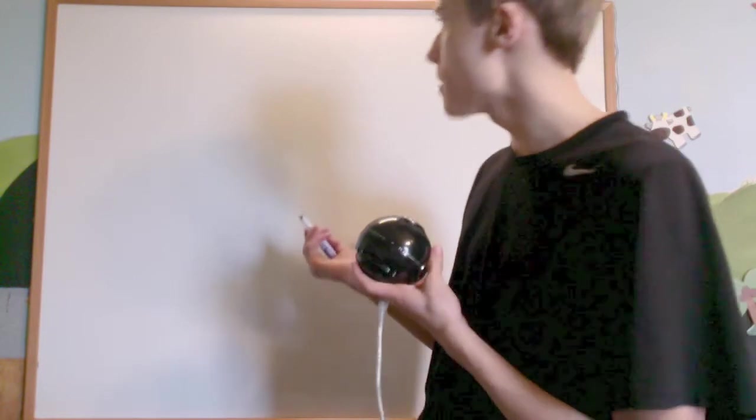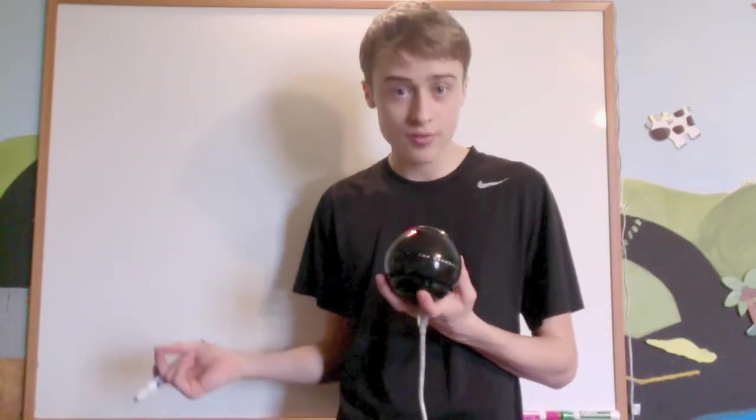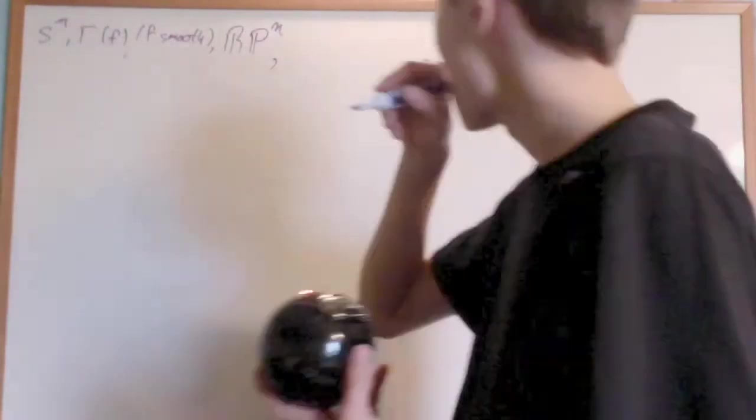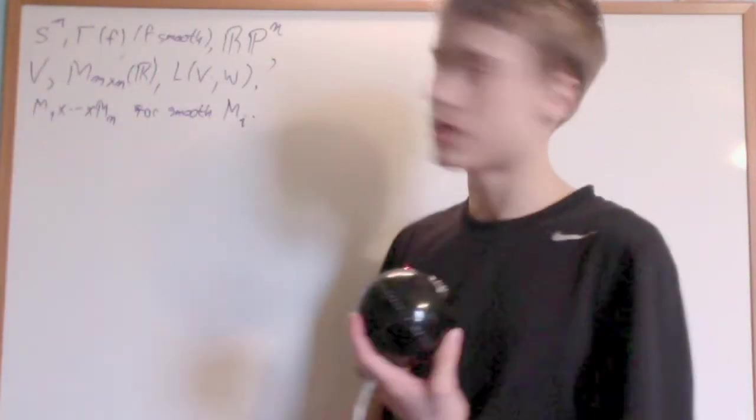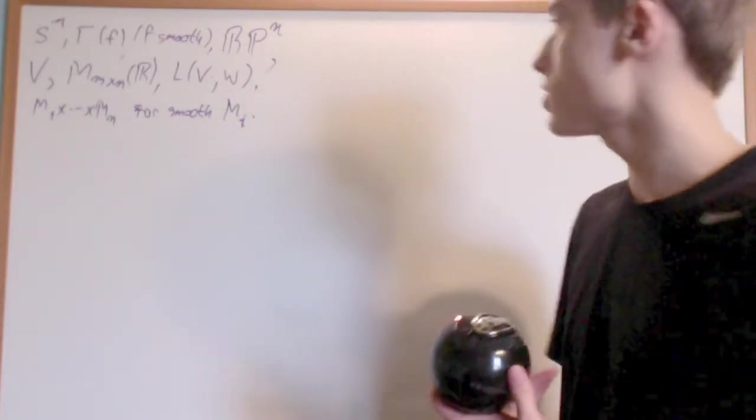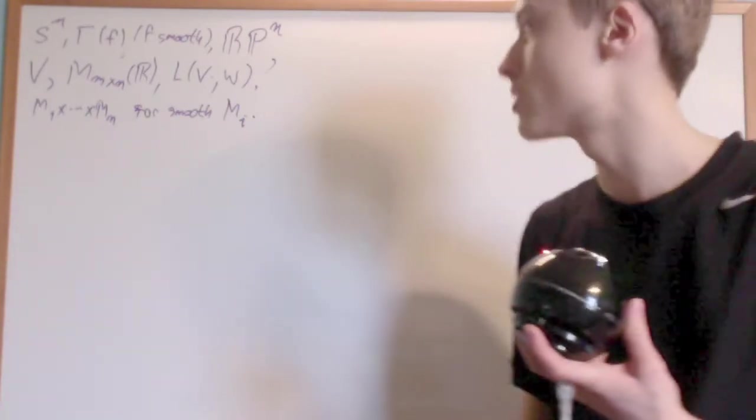So some examples of smooth manifolds are all the ones I mentioned previously, except for the first one I introduced, which was the graph of a continuous function. You just have to make it the graph of a smooth function. So basically what we have is the sphere, the graph of a smooth function, the real projective space, real vector spaces, real matrices, and linear functions between two real vector spaces. And we also have the product of smooth manifolds is smooth.